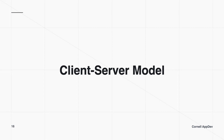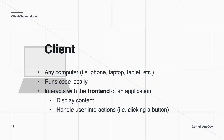So, first, the client-server model. The client is any computer — like a phone, laptop, or tablet — that runs the code locally. This interacts with the front end of an application. The front end is things that the user sees and interacts with, like the literal text, images, and the like button on Instagram. It's the user interface. The front end displays content and handles user interactions — so liking something, viewing something — that's all front end work.